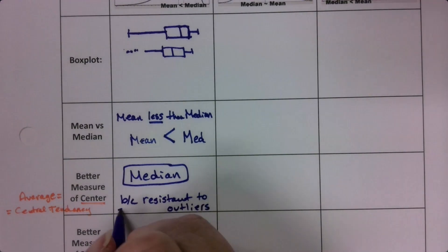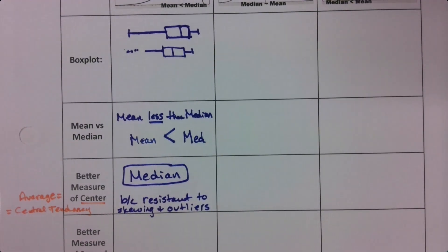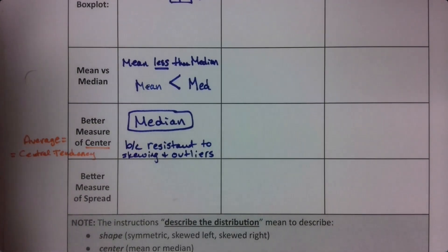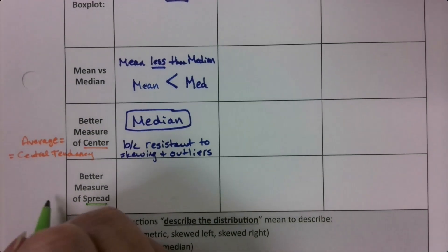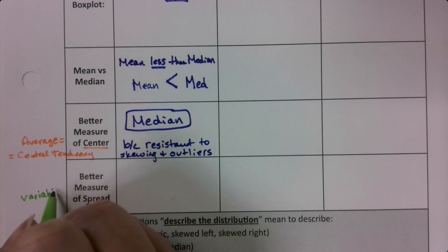To skewing and outliers, I should say. Skewing and outliers. Now, what about spread? Spread is dispersion. So variability, dispersion, that's what spread is.